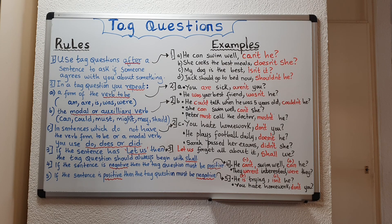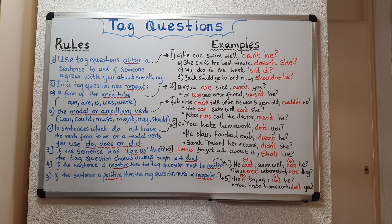In sentences which have the verb to be or a modal verb, rule number four and rule number five apply: if the sentence is negative, the tag question must be positive; and if the sentence is positive, the tag question must be negative.